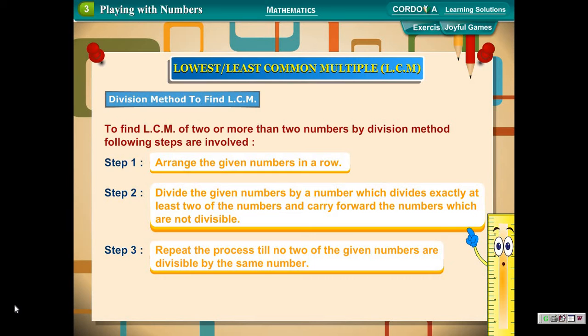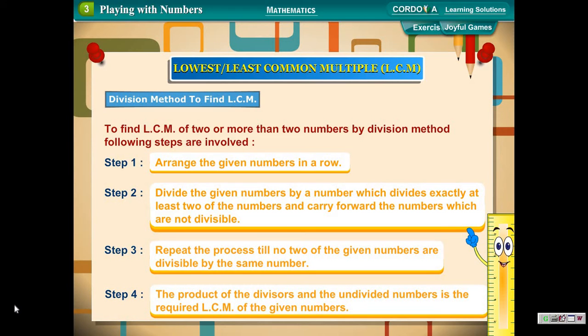Step 3: Repeat the process till no two of the given numbers are divisible by the same number. Step 4: The product of the divisors and the undivided numbers is the required LCM of the given numbers.